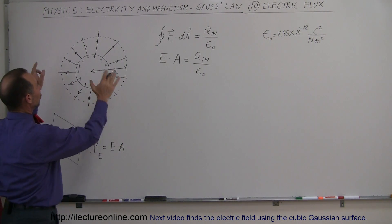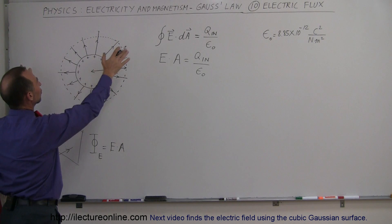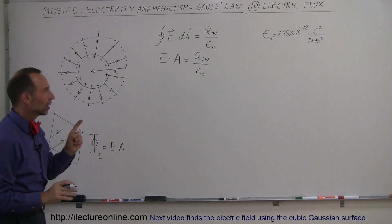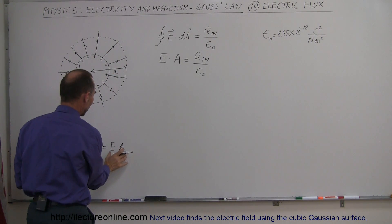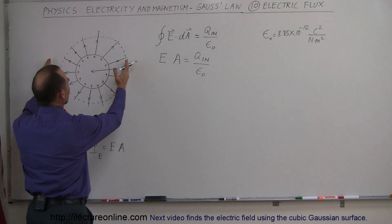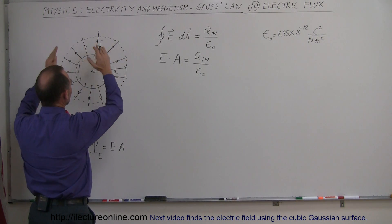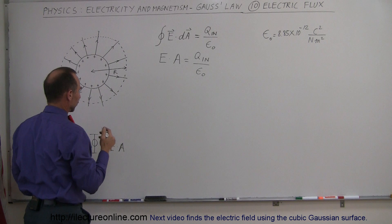And so we can think of the Gaussian surface as an area through which the electric field emanates, so therefore the electric flux here would also have to be equal to the strength of the electric field at the surface times the surface area of that surface.